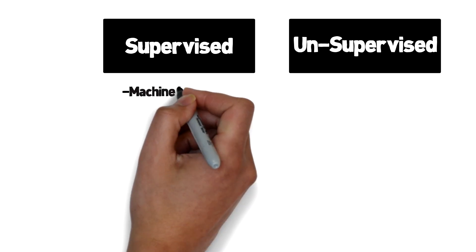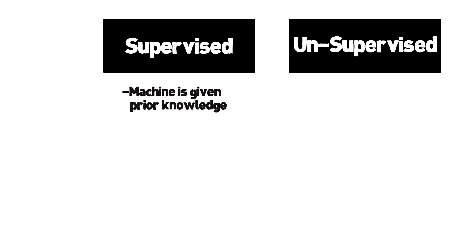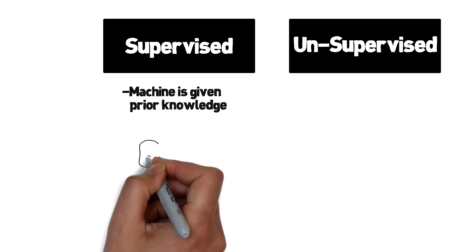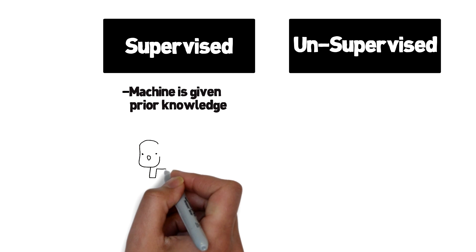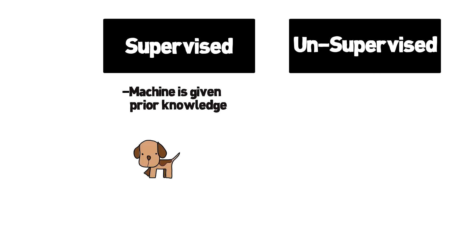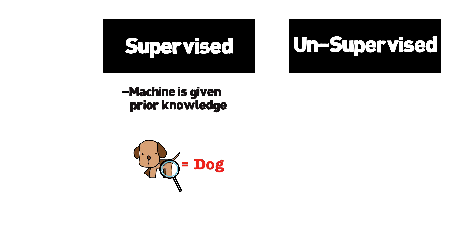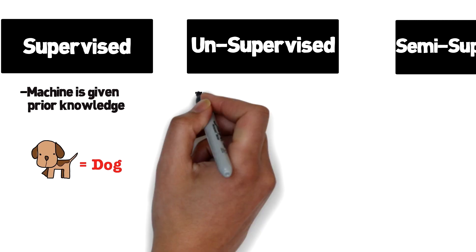In supervised learning, the machine is given some prior knowledge — what is good or bad, what works, what doesn't. A good example of this would be image classification, where we train the machine to detect a dog from a series of pictures so that it can learn what a dog is. Likewise, if we wanted the machine to classify a cat, we need to train the machine with a series of pictures of cats so that it knows to recognize a dog versus a cat from an image.